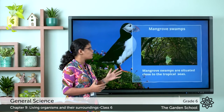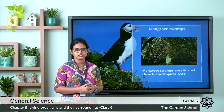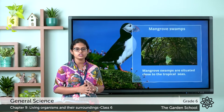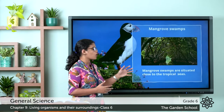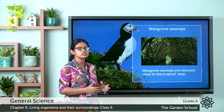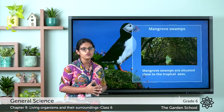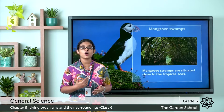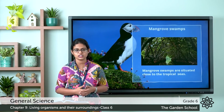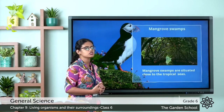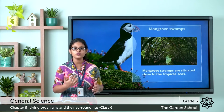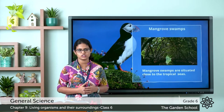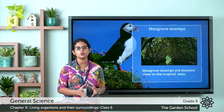The mangrove swamps have clay soil and are covered with salt water. The mangrove trees have aerial roots that grow upwards, and these roots reduce the force of ocean waves. Importantly, mangroves can also save lives and property during natural hazards like cyclones and tsunamis. So mangrove swamps are wet coastal lands situated in tropical and subtropical regions, with clayey soil covered with salt water.